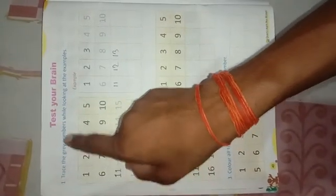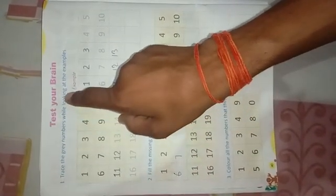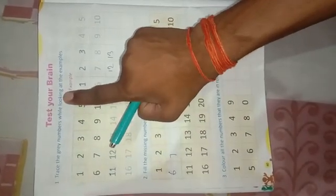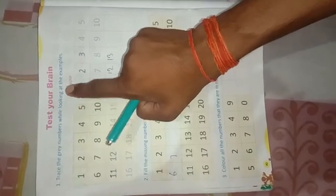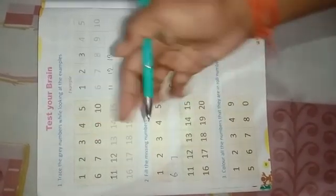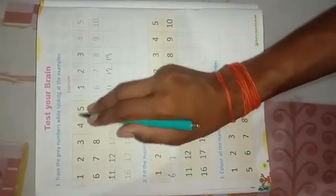Trace the brain numbers, look at the examples. Look means Dekhna at the examples. Example means Udhaarar. 1, 2, 3, 4, 5, 6, 7, 8, 9, 10.